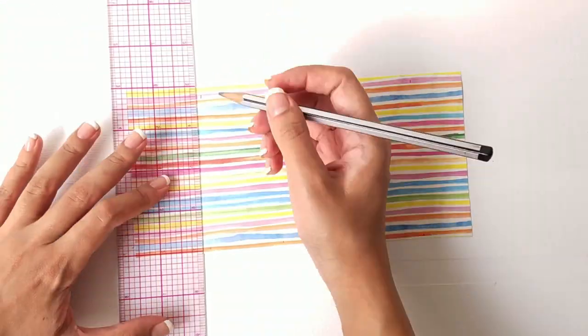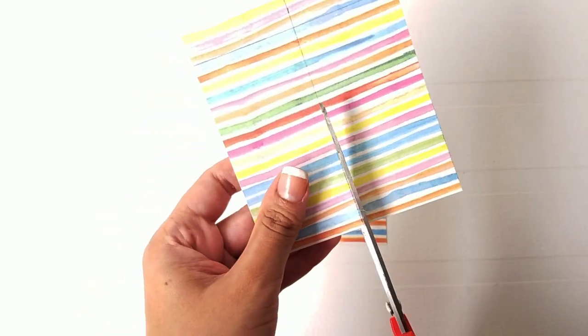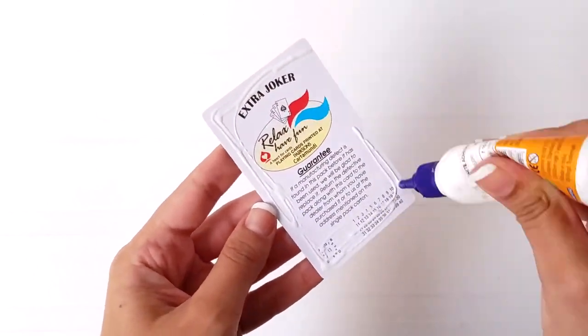Measure the height and width of the playing card and cut 52 pieces. Stick the paper on the face of all the cards as well as the cover of the deck.